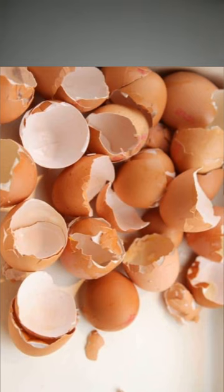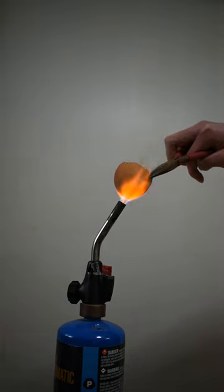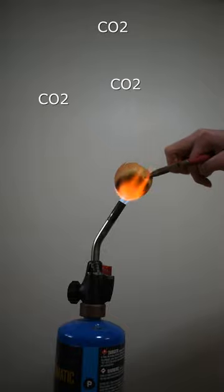Something amazing happens if we heat up some eggshells. Since eggshells are composed of calcium carbonate, if you put it under a torch, you'll notice that the shell actually loses some of its mass as carbon dioxide is released.